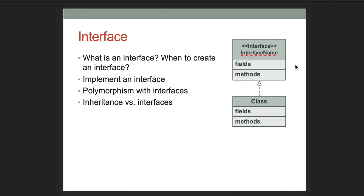Make sure you understand the UML representation of interfaces. An interface looks like a class except it has the interface prototype on it. A class that implements the interface has a dotted line with the open arrow pointing to the interface.